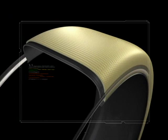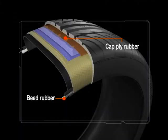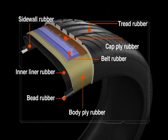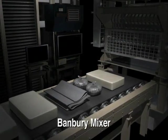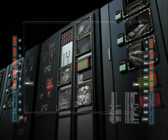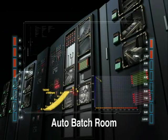Depending on the part of the tire the compound is intended for, the compound is given specific properties by changing the materials used. The rubber is mixed by large machines known as Banbury mixers. All mixing processes are automatically controlled by the super computer in the auto-batch room.